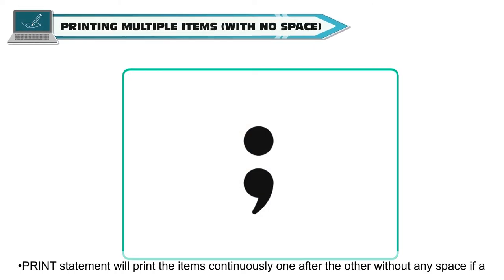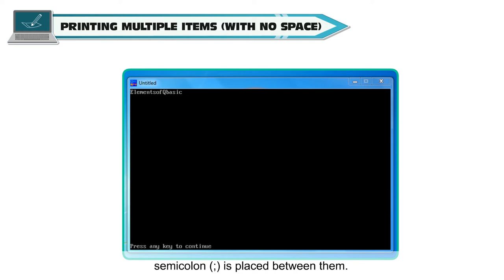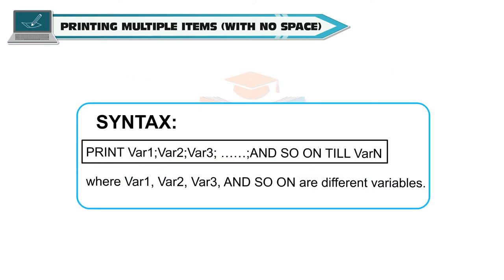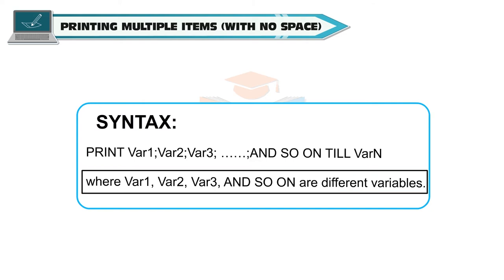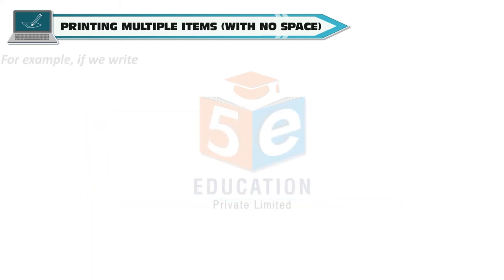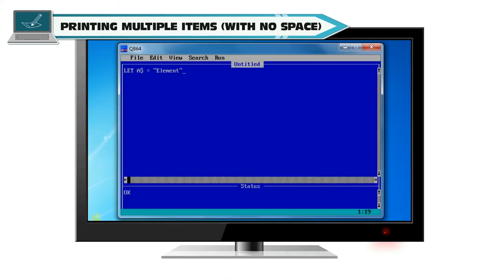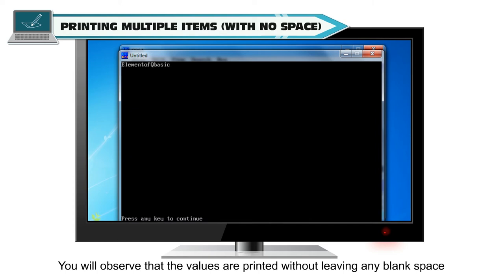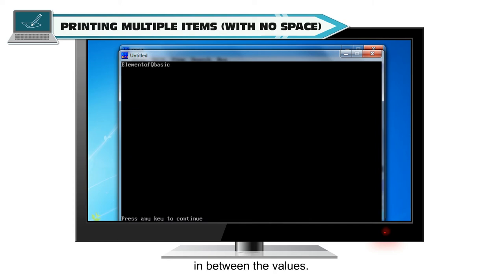PRINT will print items continuously one after the other without any space if a semicolon is placed between them. The syntax is: PRINT variable1; variable2; variable3; ... variableN. For example: LET a$ = "elements", LET b$ = "of", LET c$ = "QBasic". PRINT a$; b$; c$. You will observe that the values are printed without leaving any blank space between them.